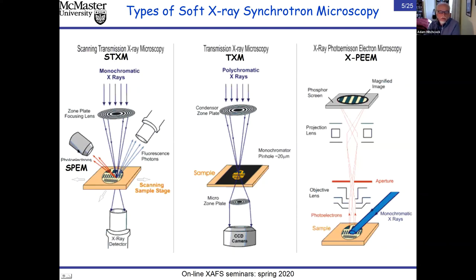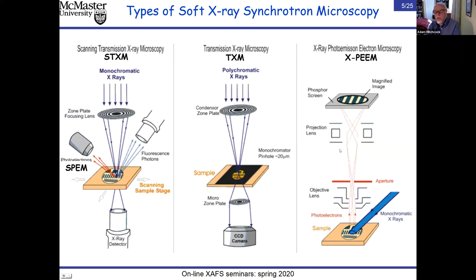One can also couple this arrangement to an energy electron analyzer for scanning photoemission microscopy, or to an X-ray fluorescence detector. These are all serial techniques—each data point taken one at a time—which is the Achilles heel because it's relatively time consuming. There are also full-field variants: transmission X-ray microscopy using an optical train much like an optical microscope, or a PEEM where electrons generated by X-rays hitting a sample are magnified through a column.